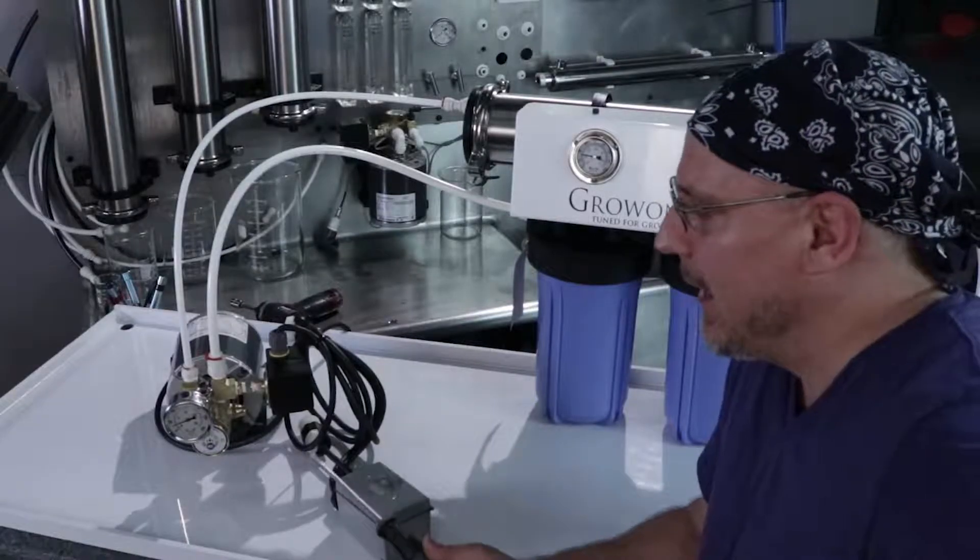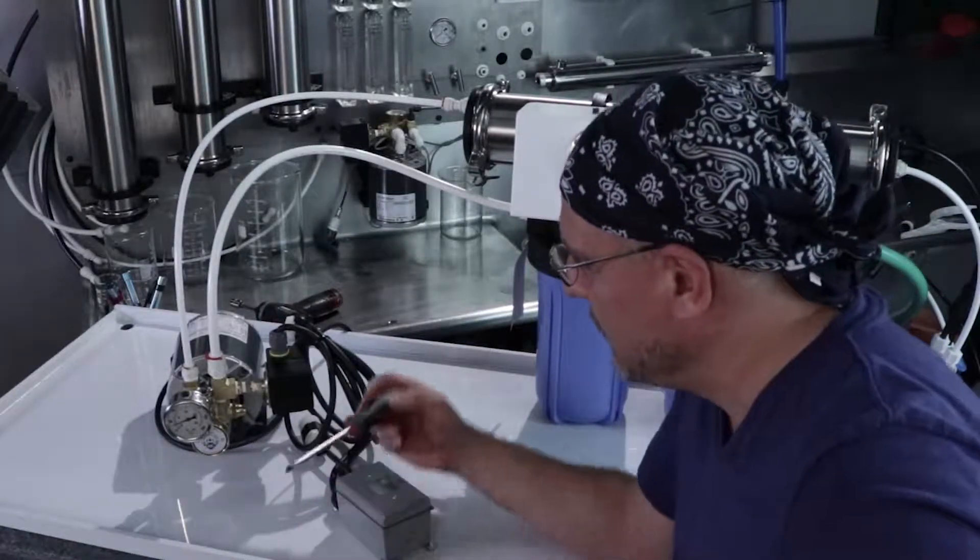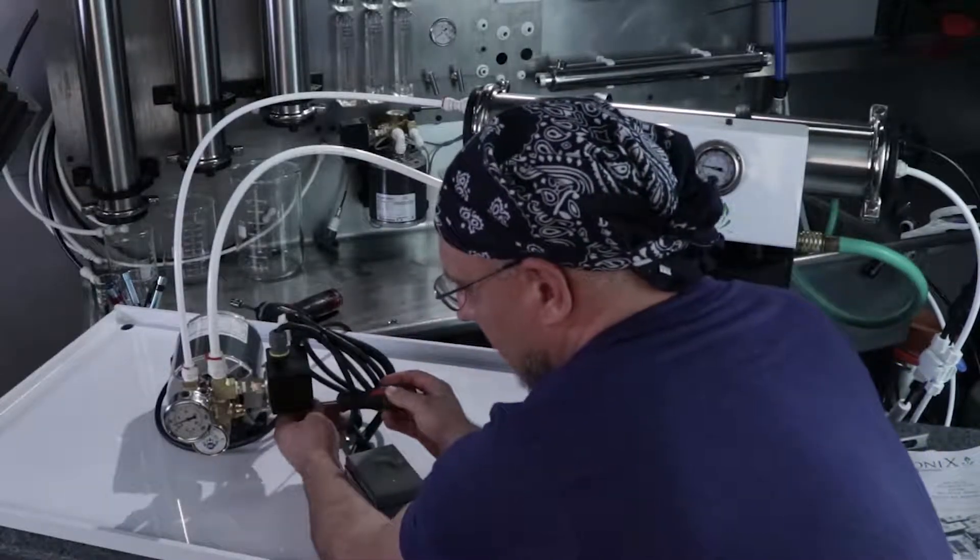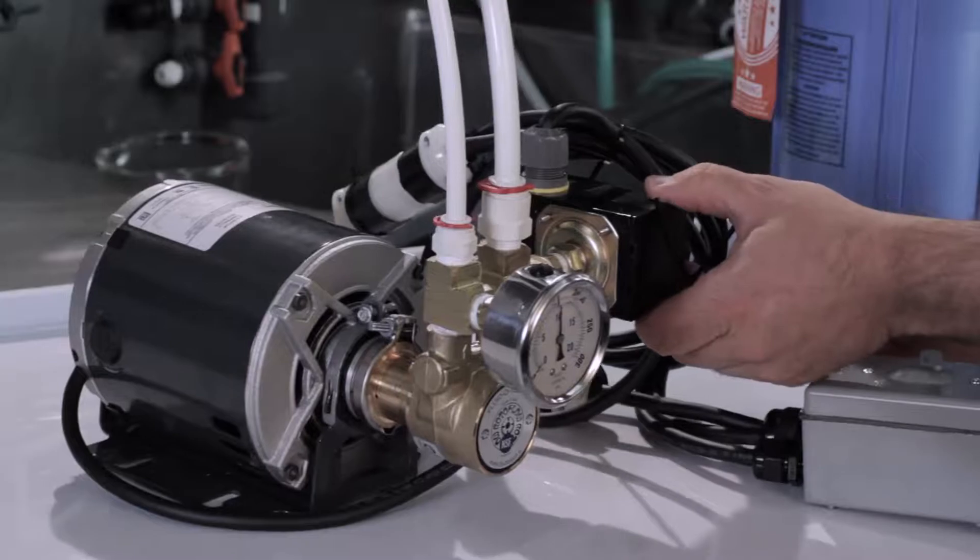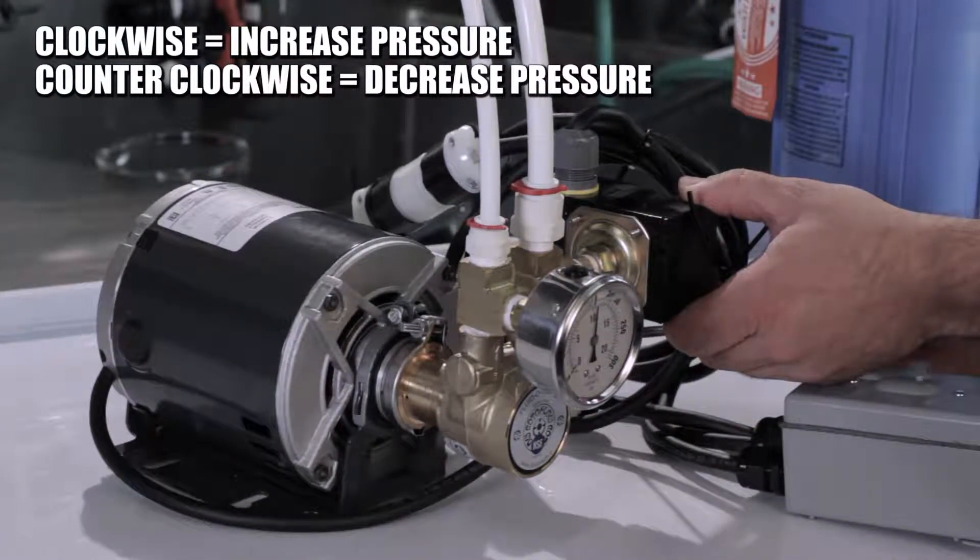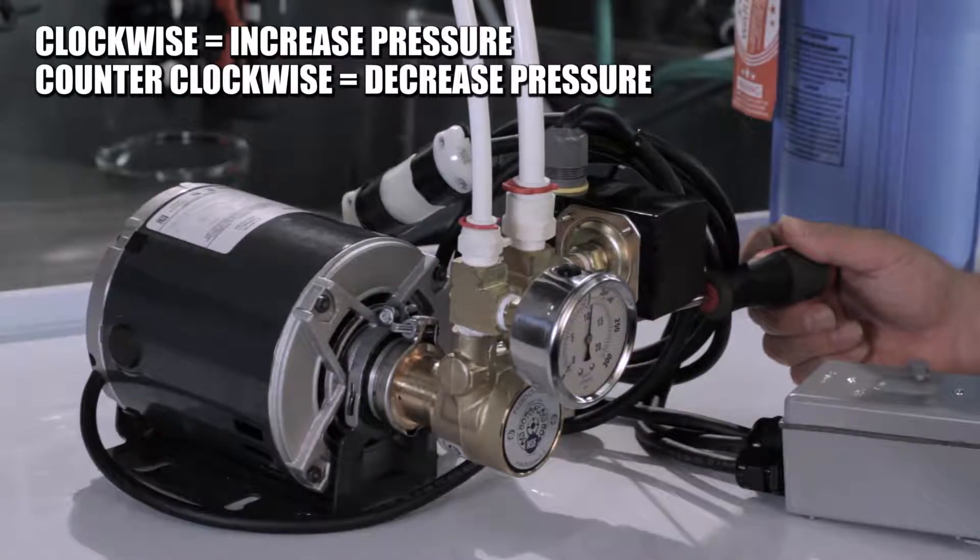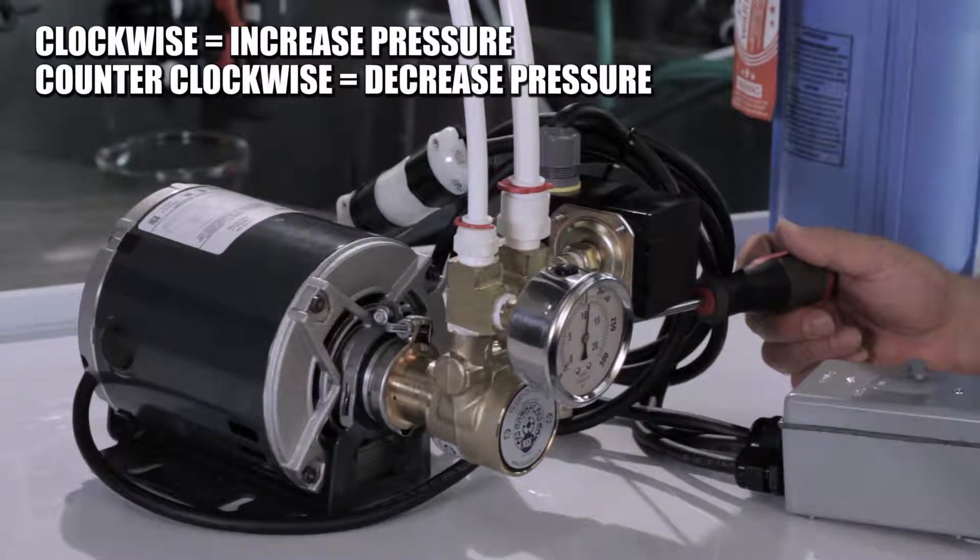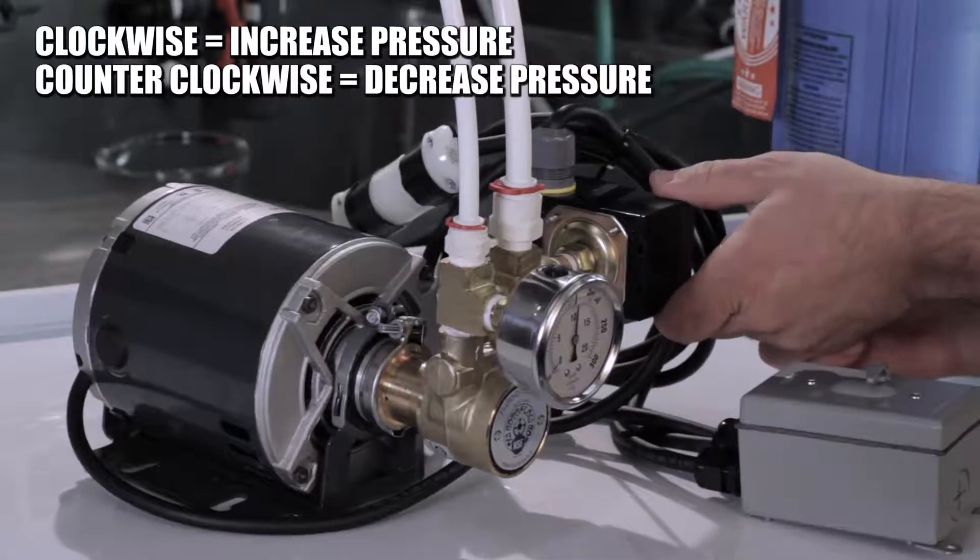Another thing to keep an eye on with a BP6010 is the output pressure. We showed you how to adjust it. You simply put a screwdriver into the acorn nut and you're going to turn it up to increase the pressure and turn it down to lower the pressure. If you're running out of water pressure and having cycling issues, you can just turn the pump down.